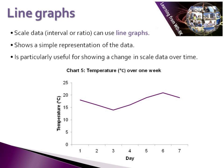The next type of chart we're going to have a look at is a line graph. Scale data — that's interval or ratio — can use line graphs, because only scale data has any form of real numeric value, and so we can plot those numeric values on a line graph. The example that we have here shows a relatively simple representation of some data. It shows a temperature over one week, starting on day one with a temperature of roughly 18 degrees, and plotting the temperature over the course of one week from day one to day seven.